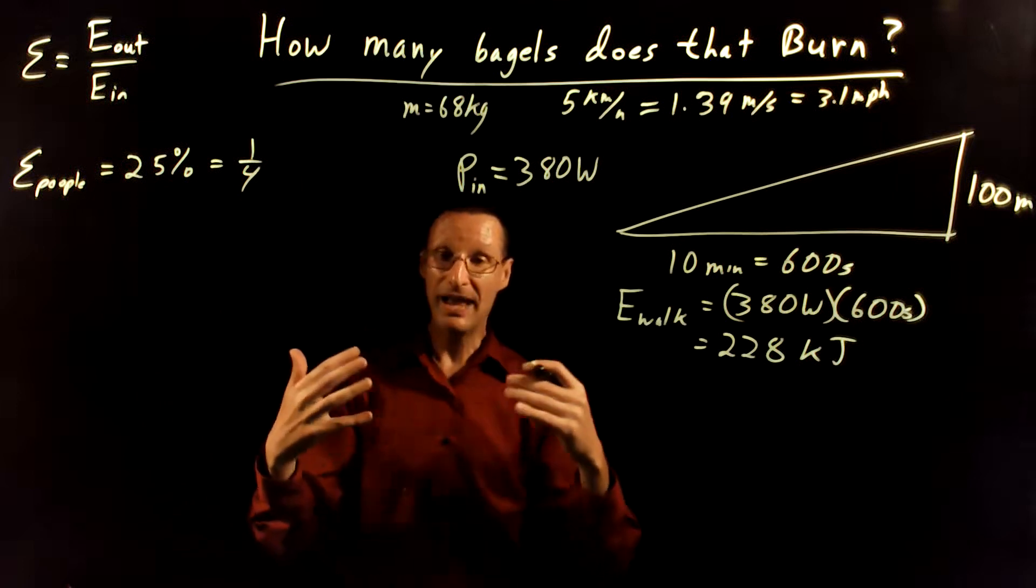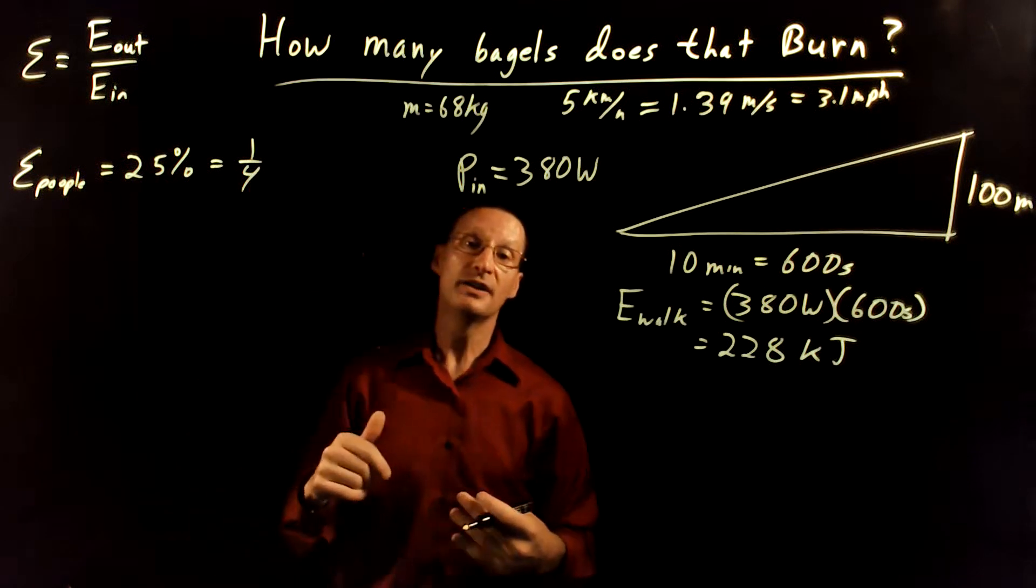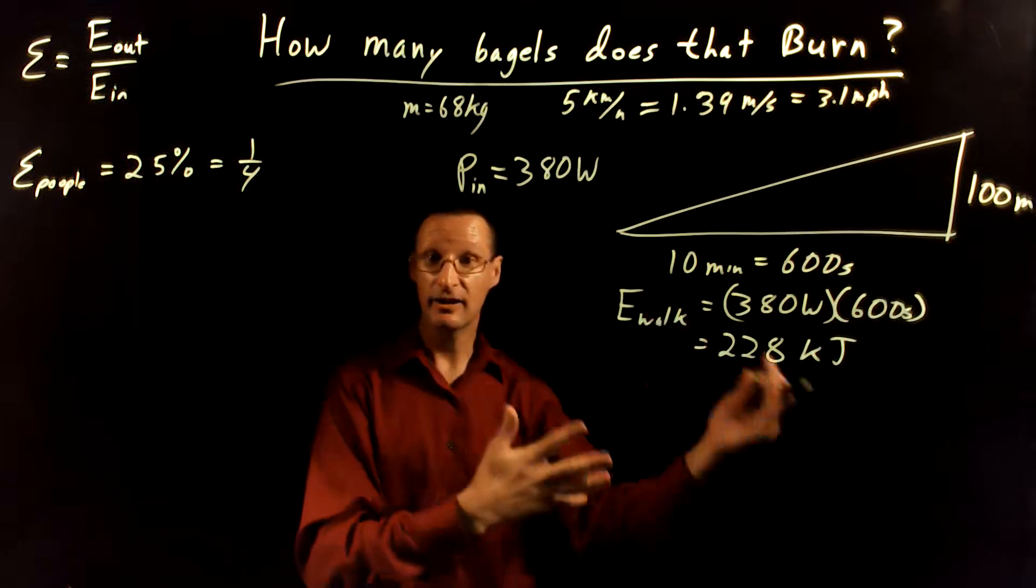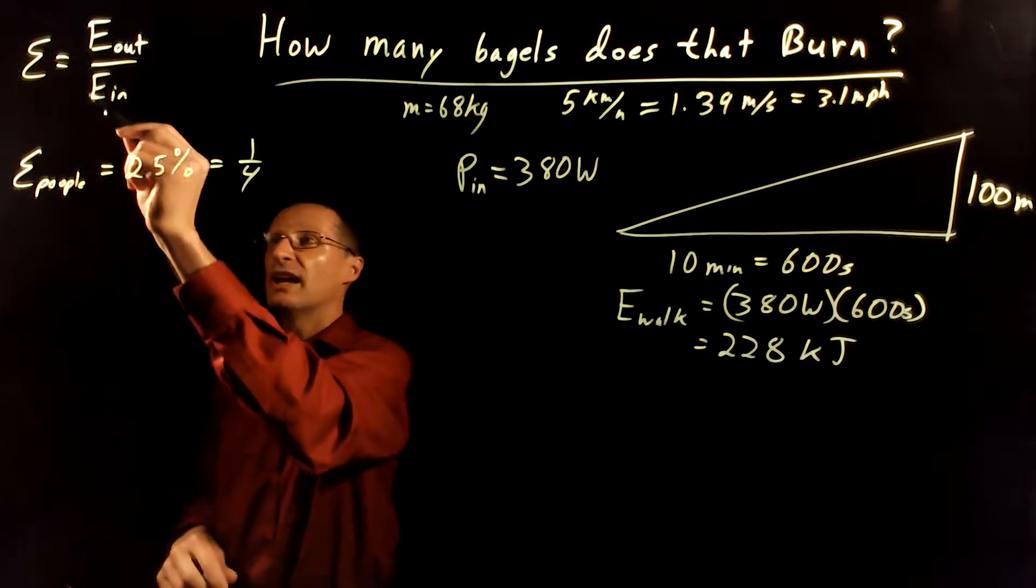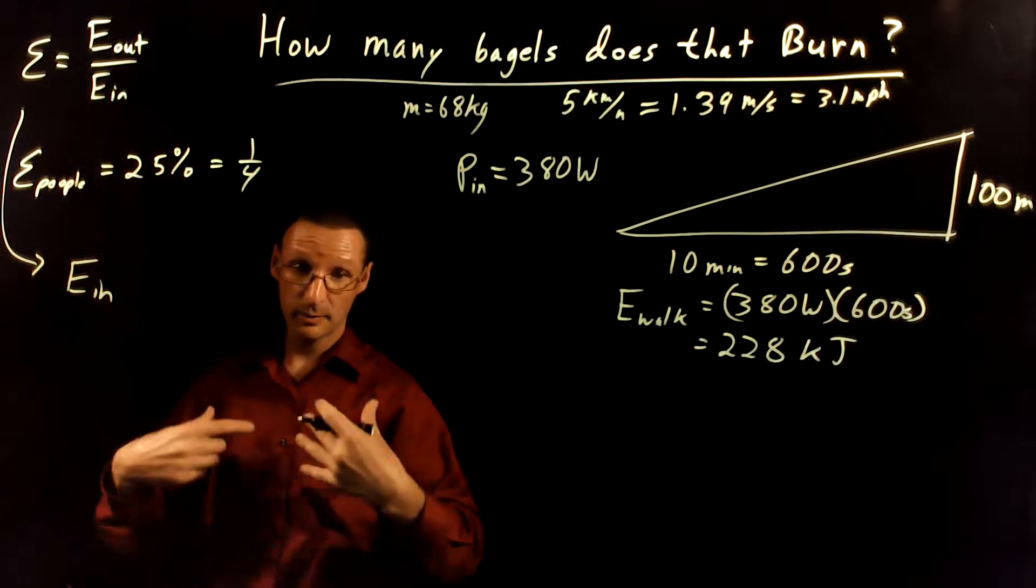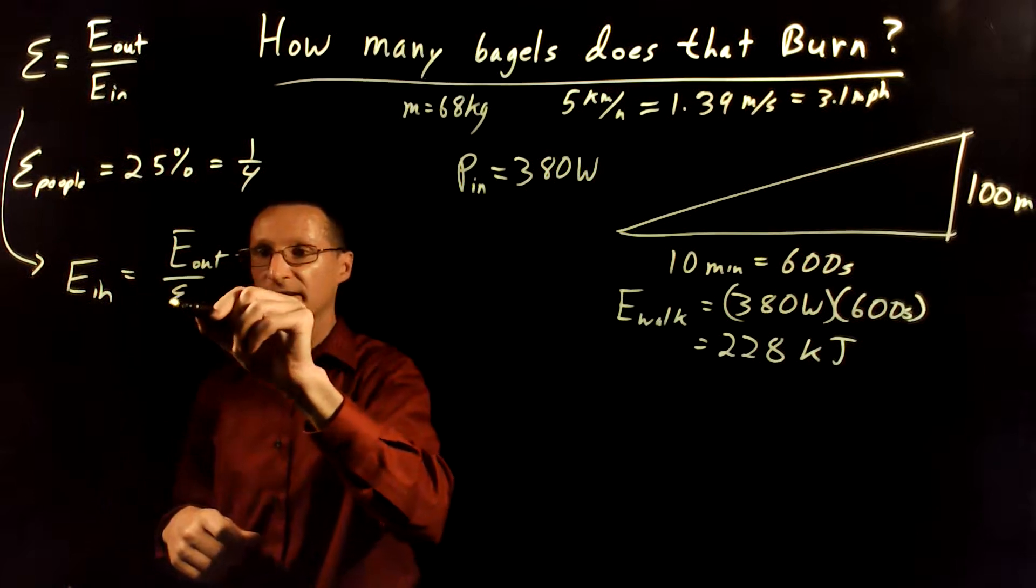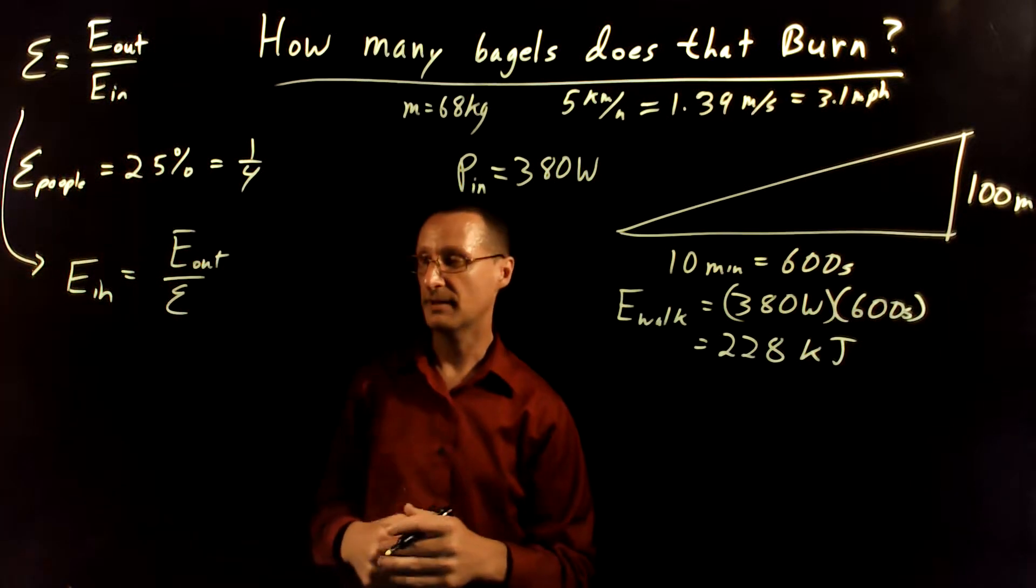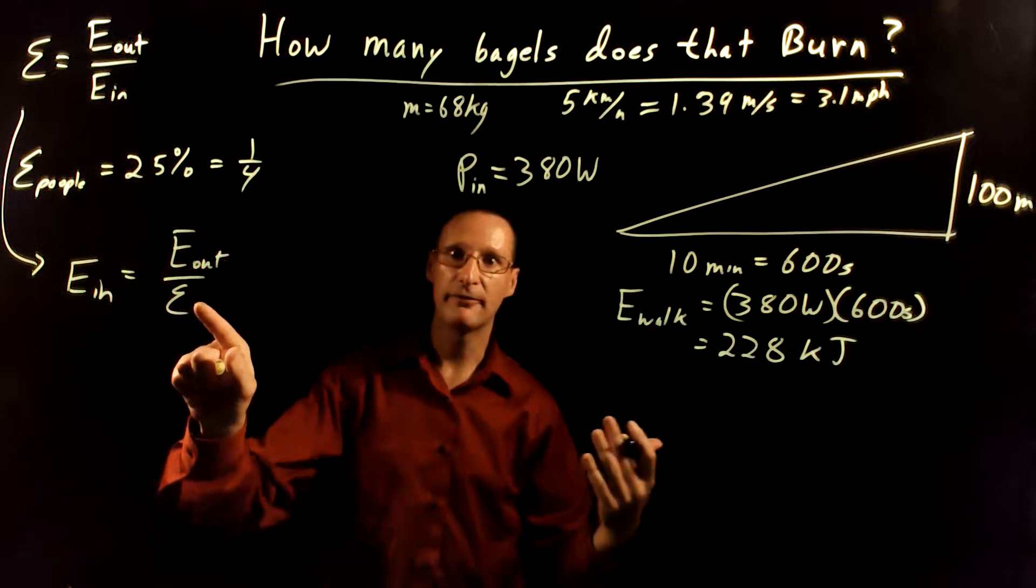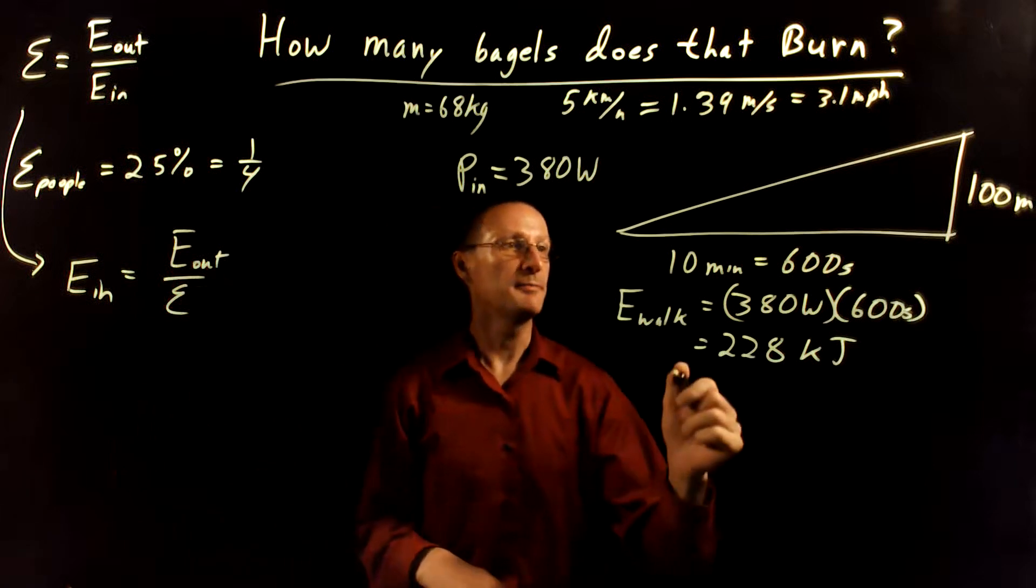So what this means is that for every one joule of mechanical output energy that we do, like climbing up a hill, we have to internally spend four joules of internal energy. Or our internal expenditure is four times bigger than our output. So if I rearrange this mathematically, I can express that as the energy input that our bodies consume inside is equal to the energy output divided by the efficiency. And I just did some algebra on that real quick. So dividing by 25% down here is the same as multiplying by four. So really, we just have to take the energy output and multiply it by four.